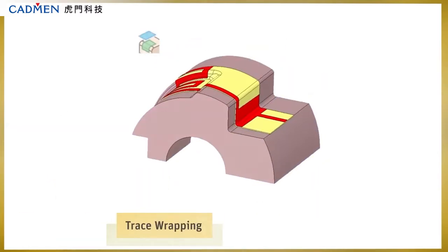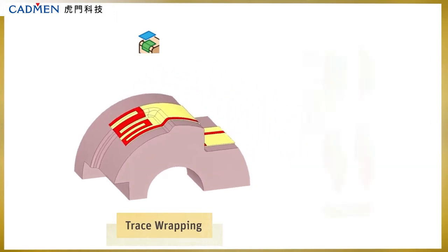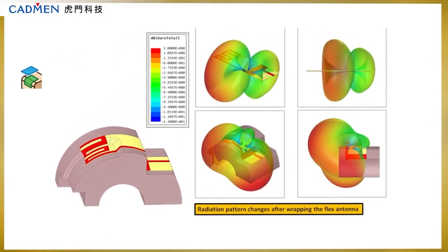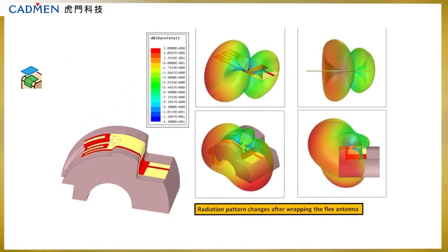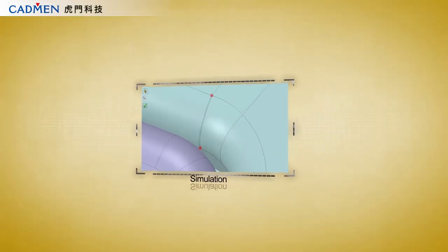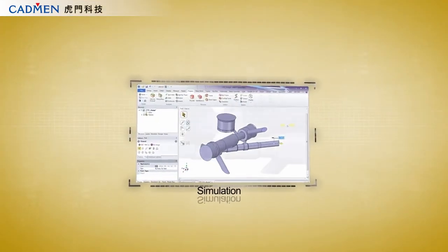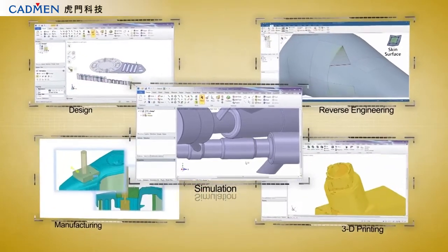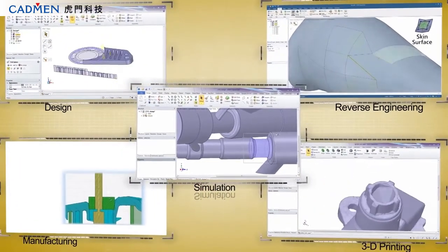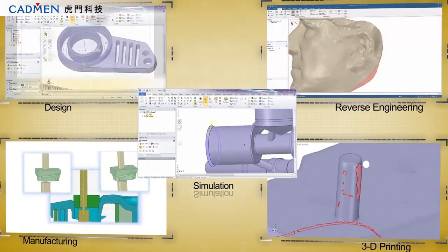For electrical applications, the trace wrapping functionality ensures accurate geometry as a starting point, leading to accurate simulation results. Simplifying geometry for analysis in SpaceClaim means huge efficiency gains. Regardless of your workflow or task, SpaceClaim's unique modeling platform is second to none.